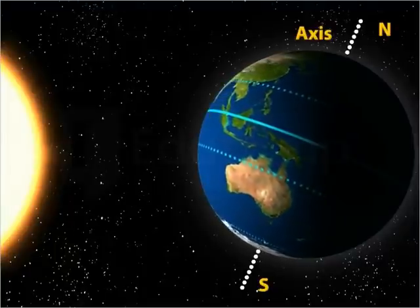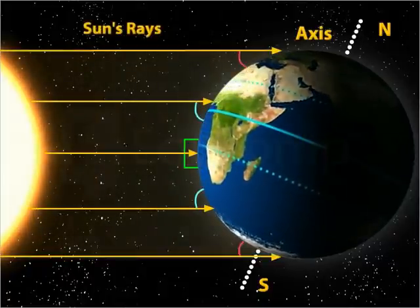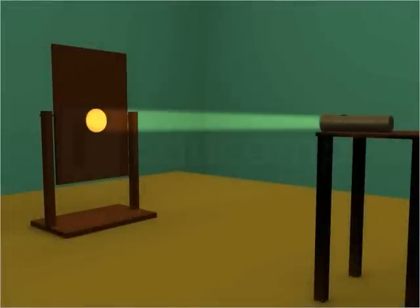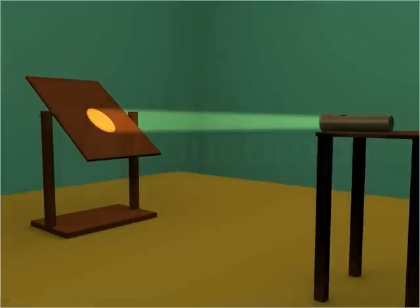Studies show that the Earth has a spherical shape, due to which the sun's rays do not fall at the same angle. Let us understand with an example. Look at the light coming from the torch, which is falling on a piece of cardboard placed in front of the torch. You will notice that the torchlight falling on a straight surface is bright and covers a smaller area. Now, if you place the cardboard in a slightly slanting position, you will notice that the torchlight falling on the slanted surface is less bright and covers a larger area.